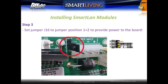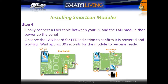Locate jumper J16 at the top of the panel and set it to position one and two — this provides power to the Smart LAN module. Finally, connect the LAN cable between the PC and the LAN module, then power up the panel. Observe the LEDs on the LAN board to confirm it is powered up and working. Wait approximately 30 seconds for the module to become ready before connection.